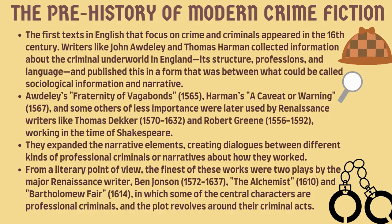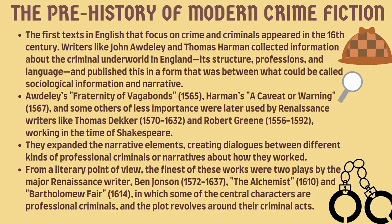Here comes the pre-history of modern crime fiction. The first texts in English that focus on crime and criminals appeared in the 16th century. Writers like John Audley and Thomas Herrmann collected information about the criminal underworld in England — its structure, professions, and language — and published this in a form between sociological information and narrative. Audley's Fraternity of Vagabonds and Herrmann's Akevit or Warning were later used by Renaissance writers like Thomas Dekker and Robert Greene, working in the time of Shakespeare. They expanded the narrative elements, creating dialogues between different kinds of professional criminals or narratives about how they actually worked.